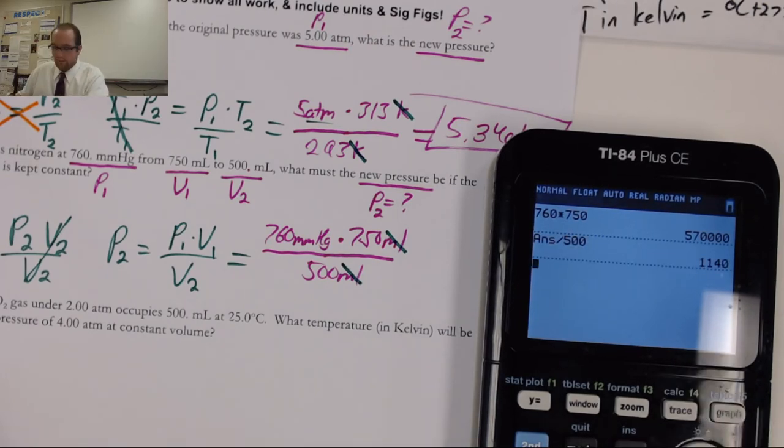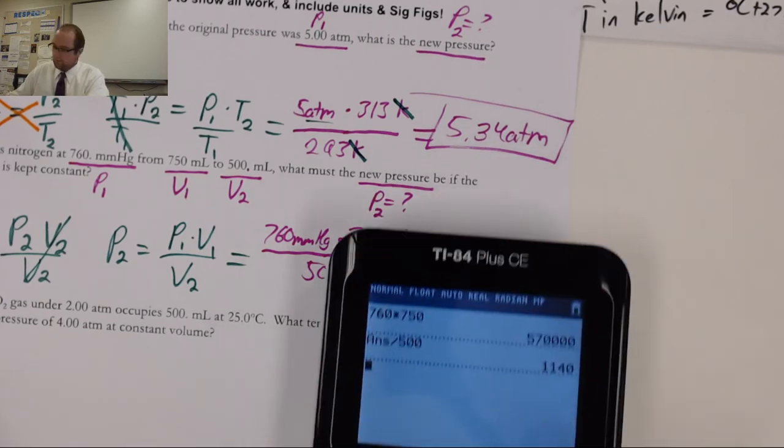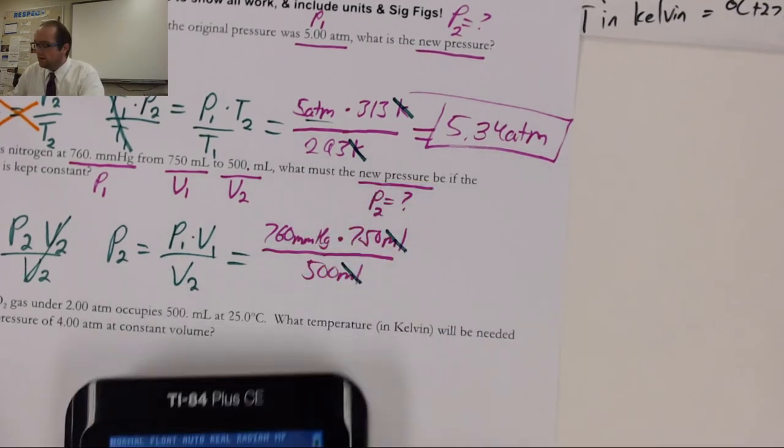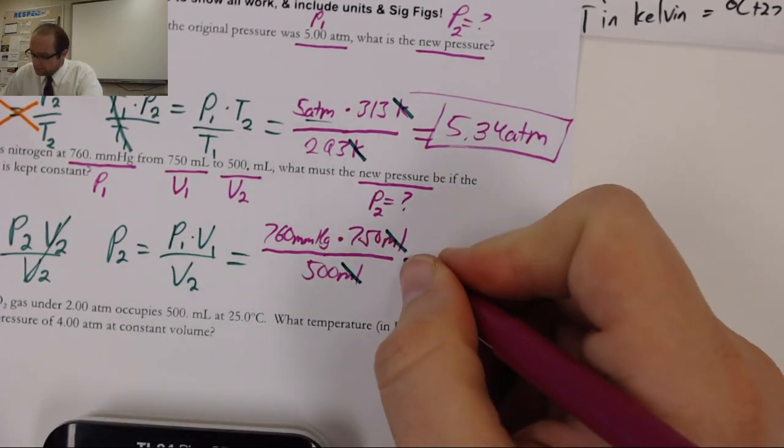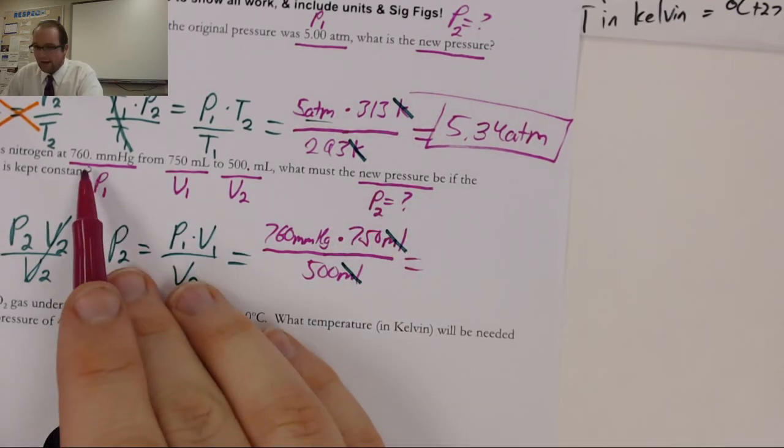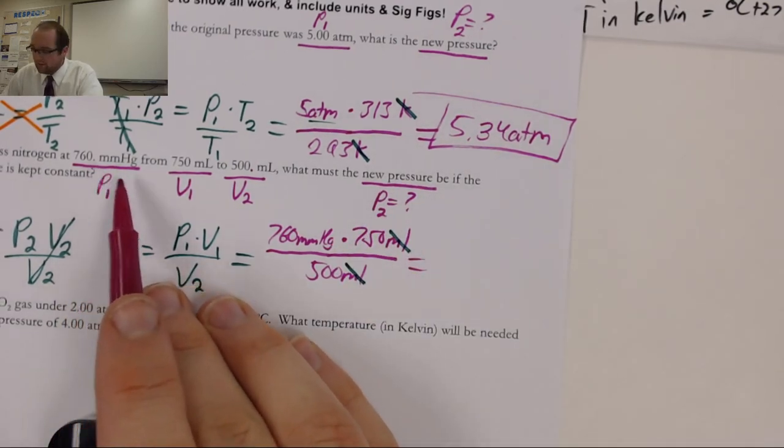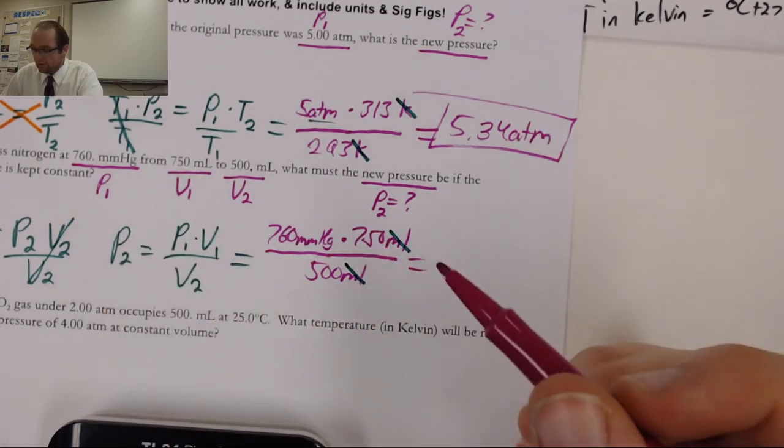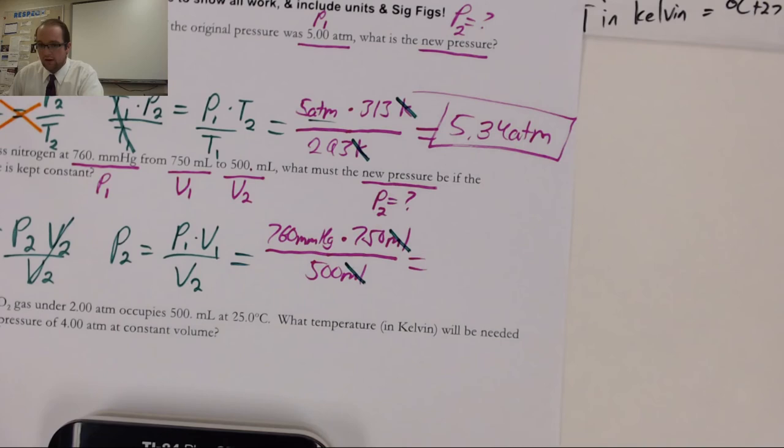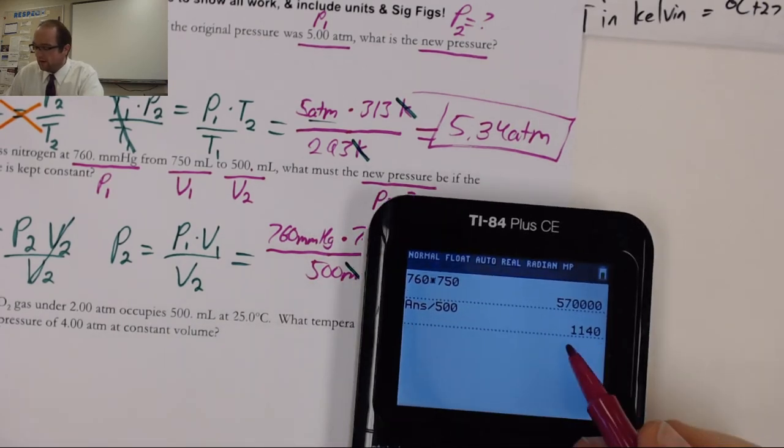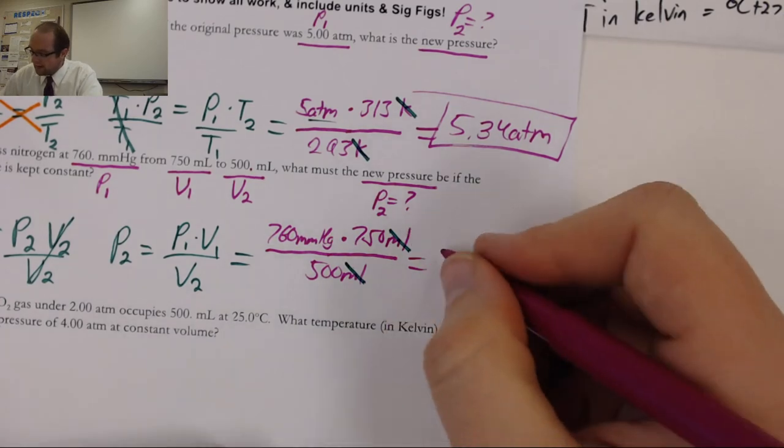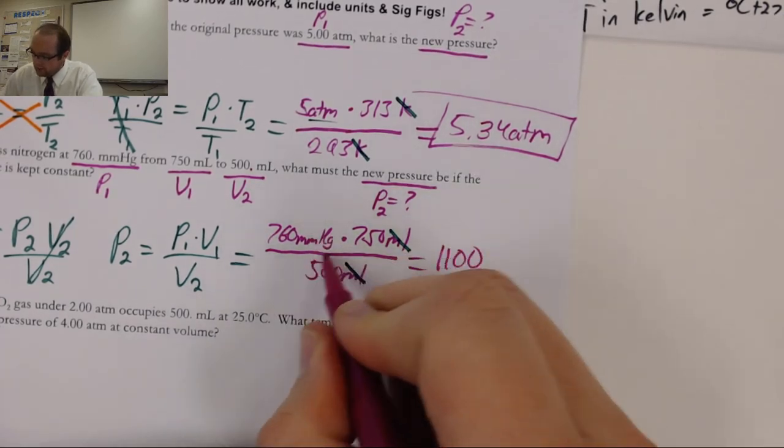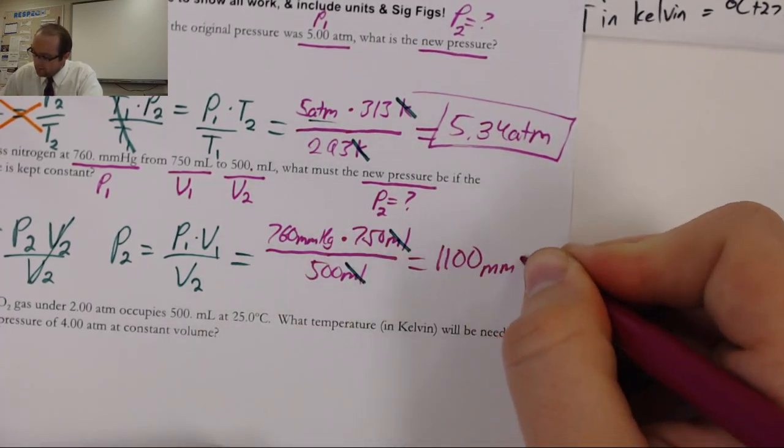So, I end up with the answer 1140. I want to check my sig figs here. I have three sig figs. Three sig figs. 750 has no decimal place. So, it's going to be two sig figs. So, my 1140 is going to get rounded to one, two sig figs. Get rid of the fours rounded down. So, I'm going to have 1100, my only unit left, millimeters of mercury.